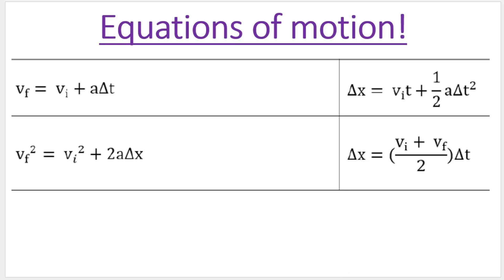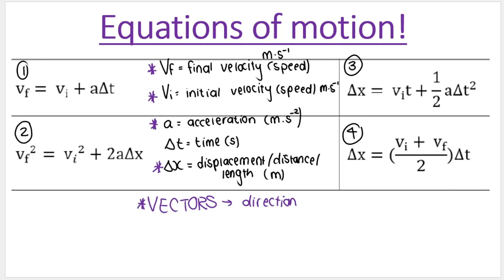These are the four equations of motion that we will be using. I will label each of these equations number one to number four. These are given to you on your data sheet or your formula sheet, but it's important to know what each variable in the equation means. So I first want you to notice that each formula has four different variables inside them. For example, formula number one has VF, VI, acceleration, and time. Formula number three has VF, VI, acceleration, and displacement or distance. Each of these formulas have four variables, and you should be familiar with these variables and what they are.